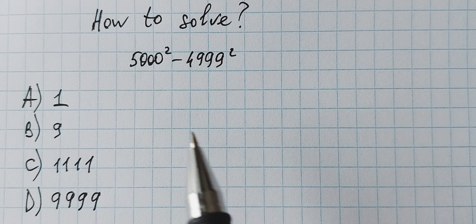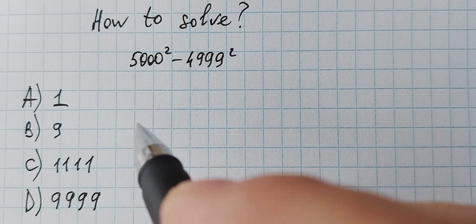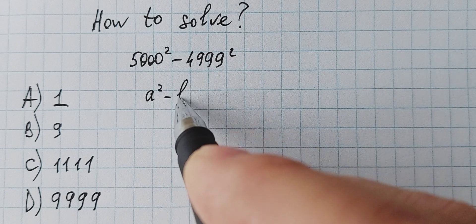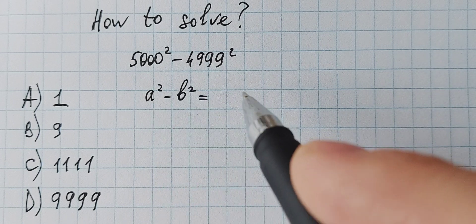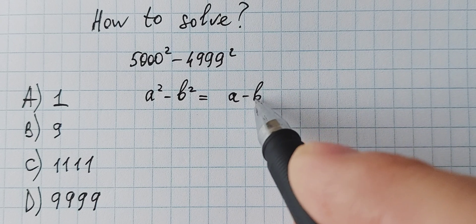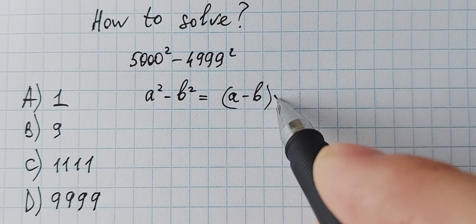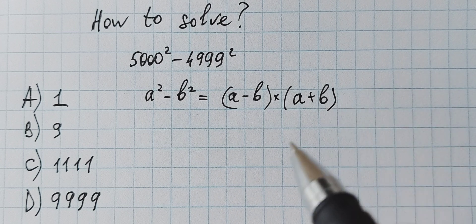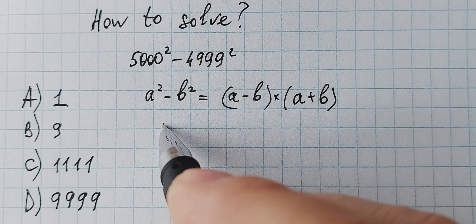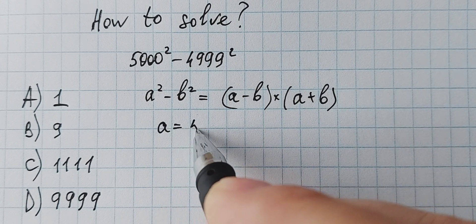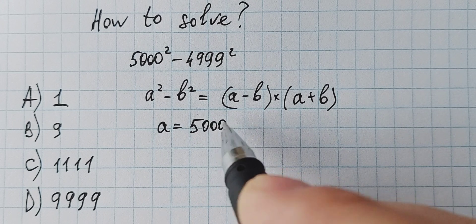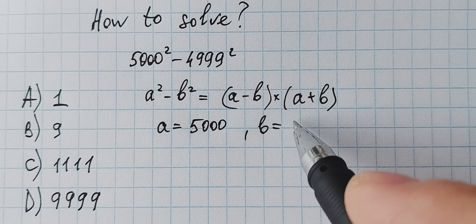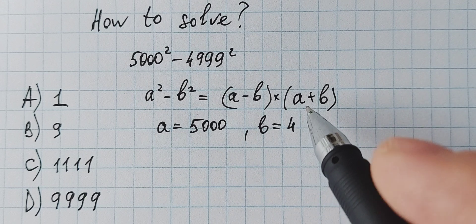How to solve? Applying the formula: a squared minus b squared equals a minus b times a plus b. So, a equals 5000, b equals 4999.